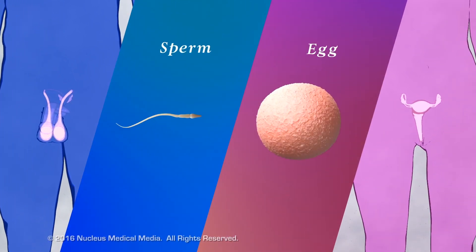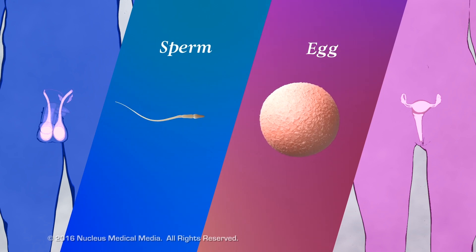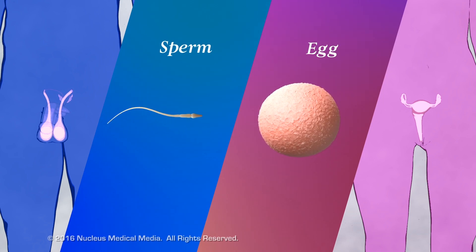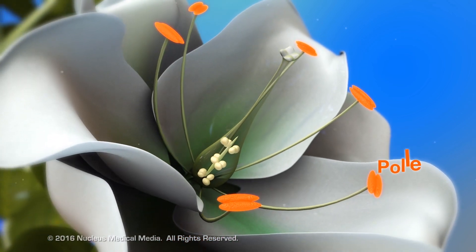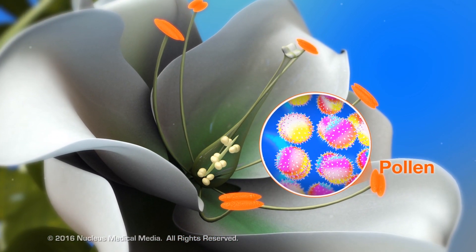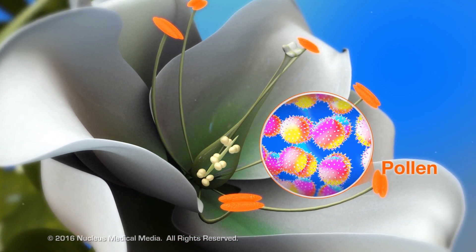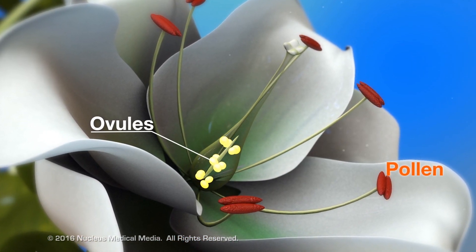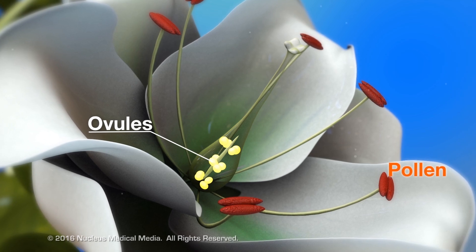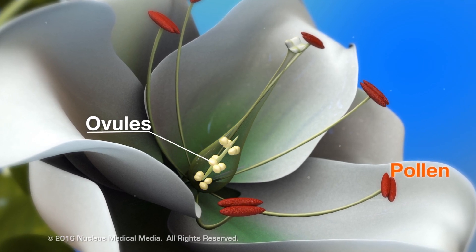These haploid gametes are sperm cells in the male and eggs in the female. In the plant kingdom, pollen grains contain the male gamete, while structures called ovules contain the female gamete.